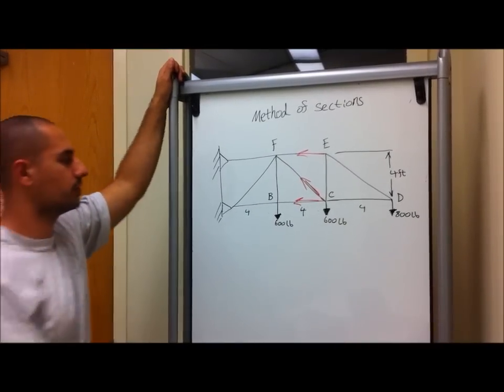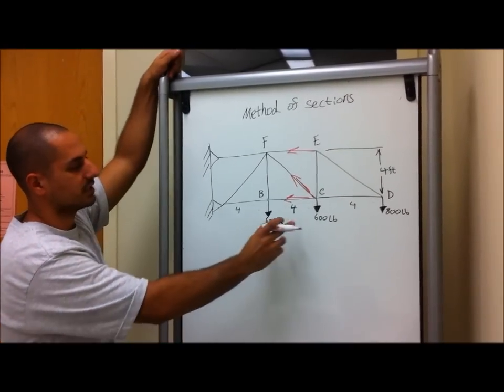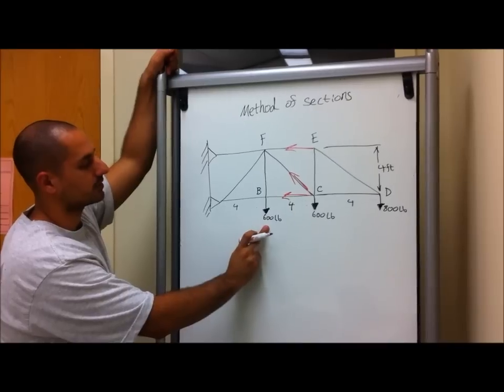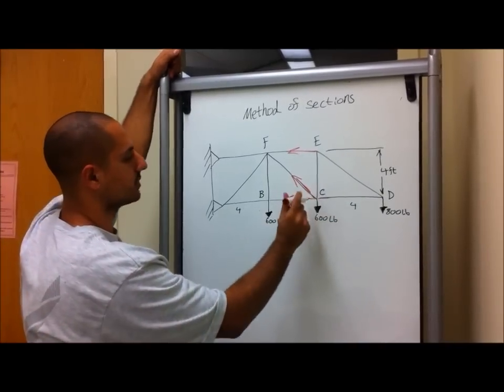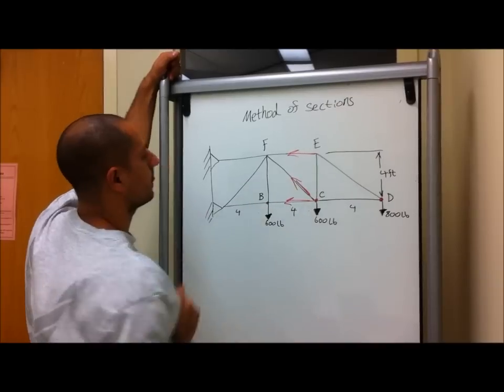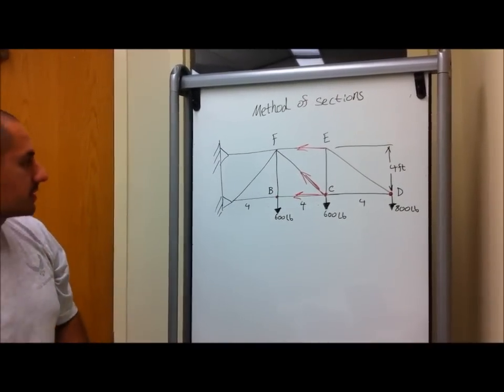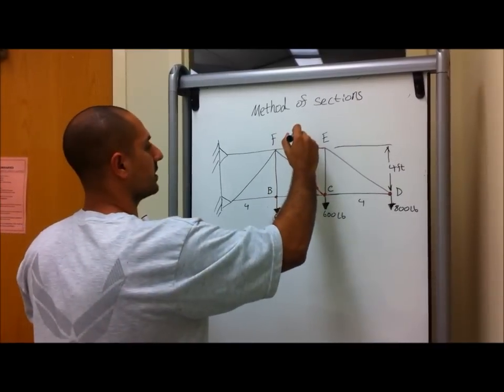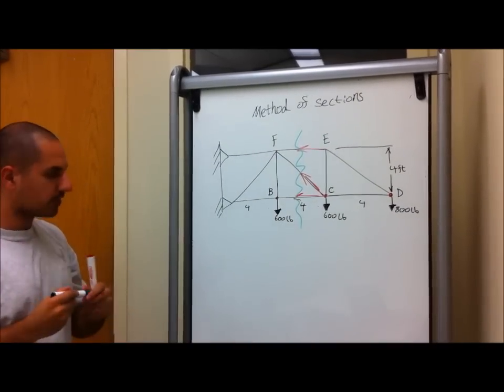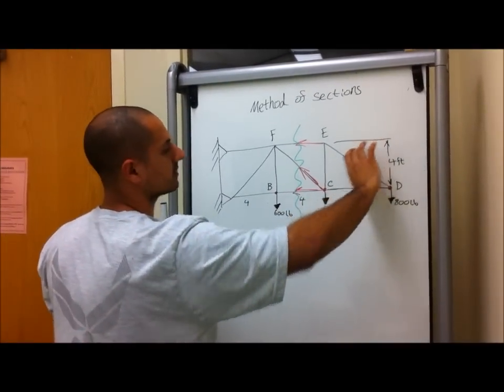Well, first, before we even do that, you have to determine all your external forces. In this case, in this problem, it's given. As you see, we have 600 pounds acting downward on each of the main points. By the way, the distance between each is four feet, and the height is four feet.